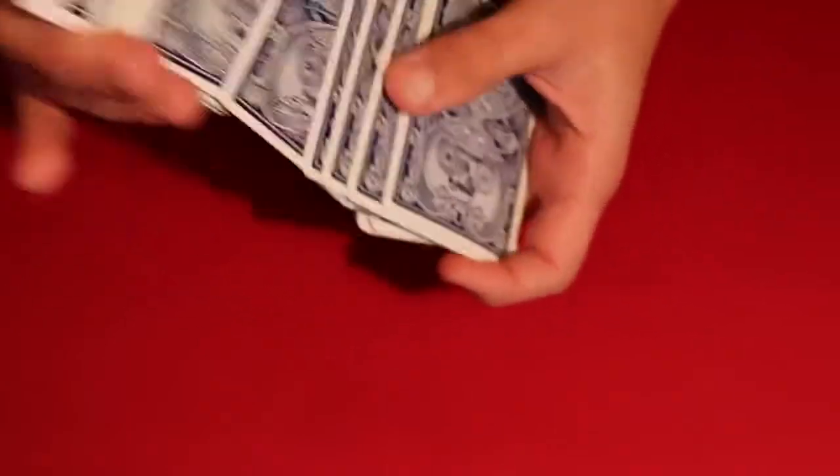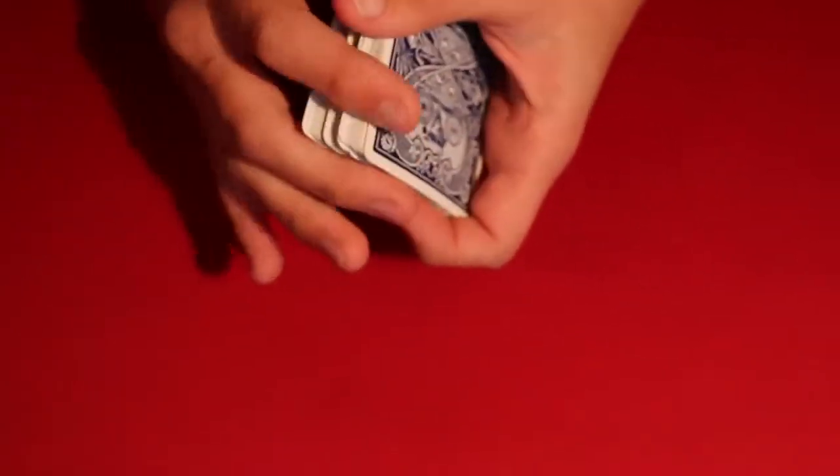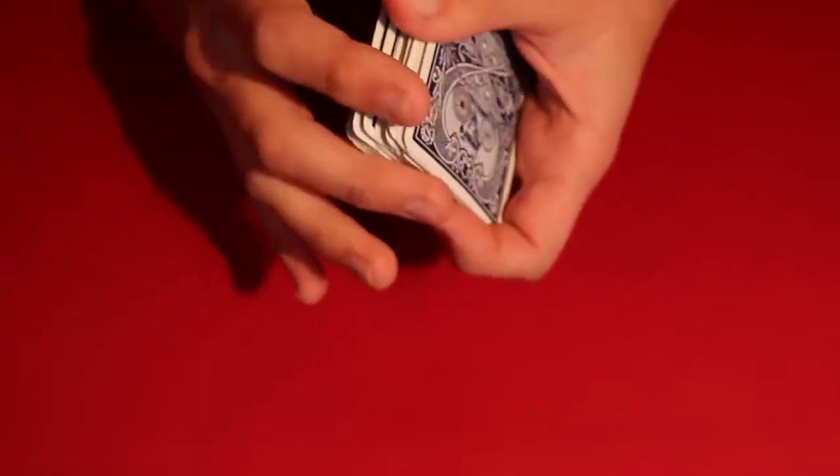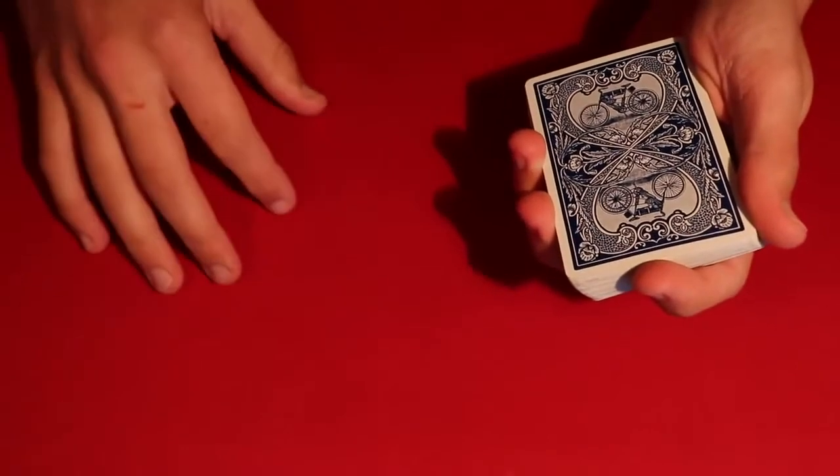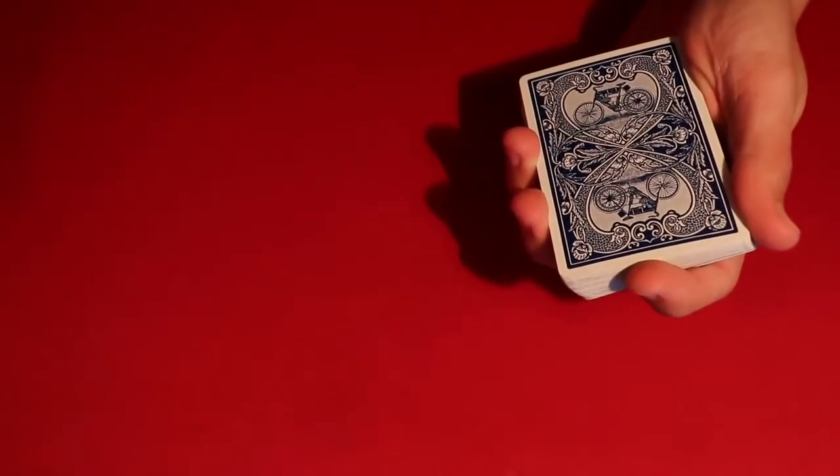All right, so in performance when the kid does the trick, he basically just keeps doing an overhand shuffle a whole bunch of times and the spectator tells him when to stop. But he does this really cool hot shot move that I can't do, so I'm gonna do a little bit of a different ending.